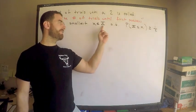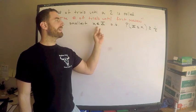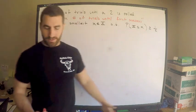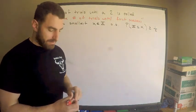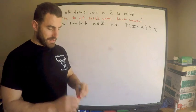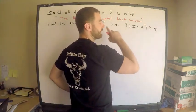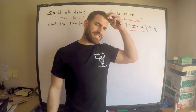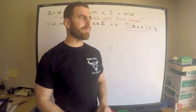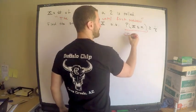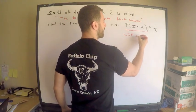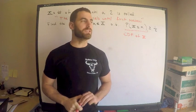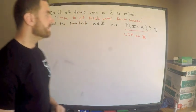The question is to find the smallest member of my random variable capital X — call it little x — such that the probability that X is less than or equal to x is greater than one half. This quantity is the CDF — the cumulative distribution function of X.